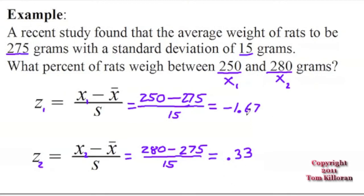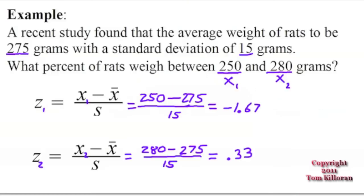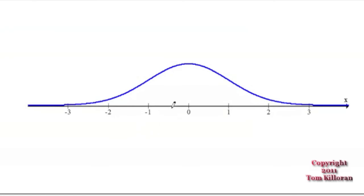So we need to look up these two values on the z-table and see what happens with them. But before I do that, let me go and plot these on here. We've got negative 1.67 and 0.33. Now negative 0.67 is right about here, and 0.33 is right about here.